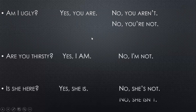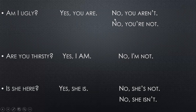Final example: Is she here? Yes, she is. No, she is not. Or no, she isn't. Note that in the negative answers we can use contractions, but in the affirmative answers we do not use contractions. Be careful with that.